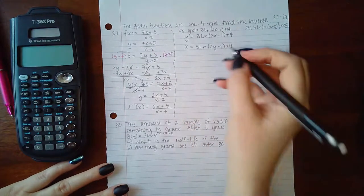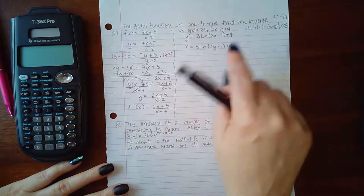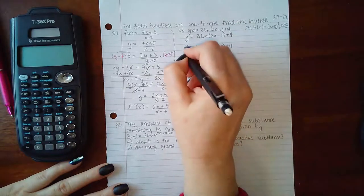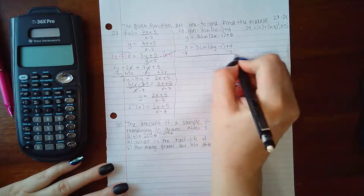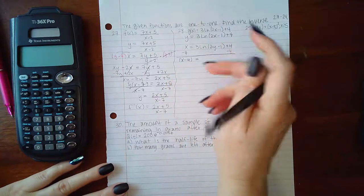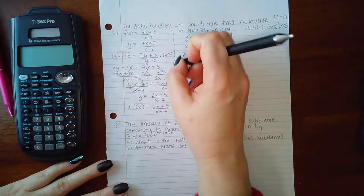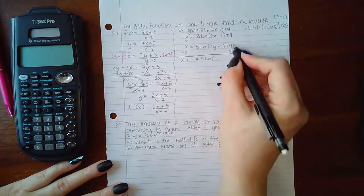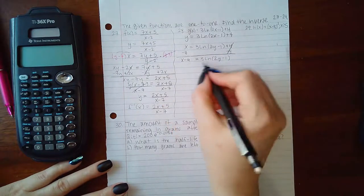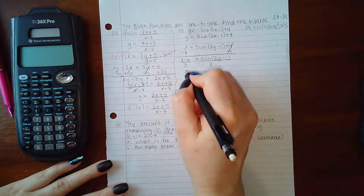And then start solving for y. Before I can get rid of the natural log, I have to get rid of the constant and the multipliers. So we get rid of this term and we have x minus 4. Then I get rid of this multiplier, so I'll divide by 3 and divide by 3, so I get (x minus 4) over 3 equals ln of (2y minus 1).